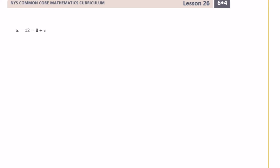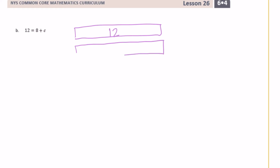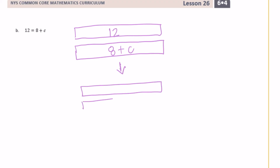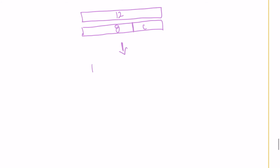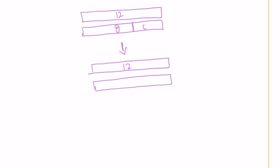Part b: 12 is equal to 8 plus c. We're going to do the same tape diagram method first. I'm going to make two tape diagrams — one showing 12 and one showing 8 plus c. Then taking it one step further, I separate 8 and c, so we have 12 equal to 8 plus c. One more step: 8 plus what equals 12? That would be 4, so c equals 4.